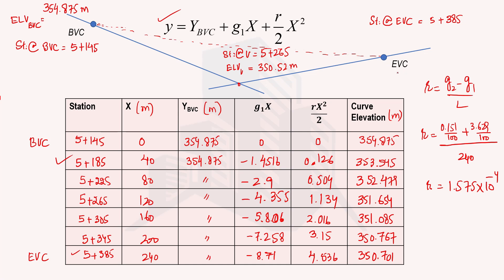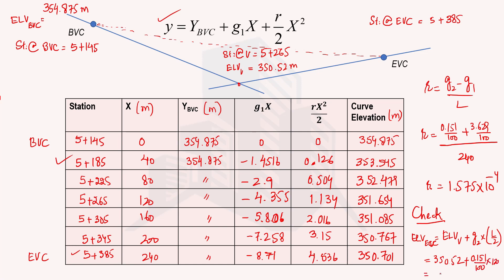The check is to calculate the elevation of EVC independently using the vertex elevation and the g2 gradient over the 120-meter distance from vertex to EVC. Elevation of EVC equals elevation of vertex plus g2 times 120: 350.52 plus 0.151 percent times 120. This gives the same elevation as calculated from the parabolic equation, confirming our calculations are correct.